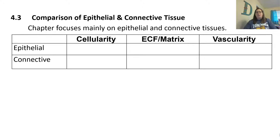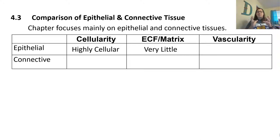Now we're going to do a comparison of epithelial and connective tissue — these are the two we're really going to focus on in this chapter. When we look at cell density, epithelial tissue is highly cellular — it has tons of cells present. There is very little extracellular fluid because so many cells take up space. Epithelial tissue is considered avascular — it does not have blood vessels in the tissue, so nutrients must be received in a different way.